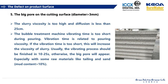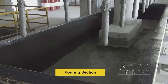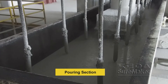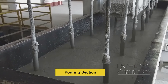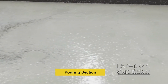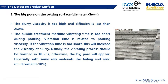Now let's talk about defects on the product — for example, how to avoid big pores on the cutting surface. We may consider reducing the slurry viscosity by adding more water. In China, we set up a bubble treatment machine during the pouring process, which helps distribute bubbles equally and reduce large-size bubbles. The vibration time is related to slurry viscosity; if the vibration time is too short, this will increase the viscosity. Usually, the vibration process should be completed within 10 to 25 seconds. Otherwise, big pores will appear, especially with raw materials like tailings and sand. According to our experience, if the mud content is more than 10%, big pores may appear.